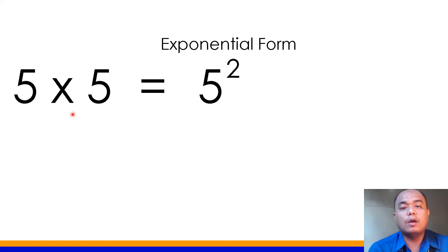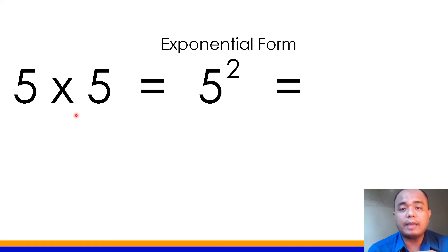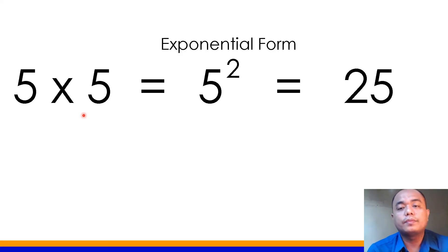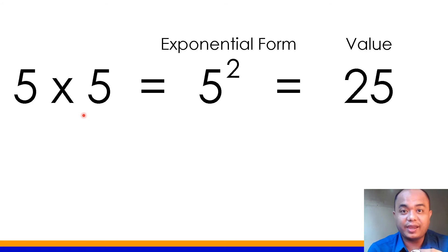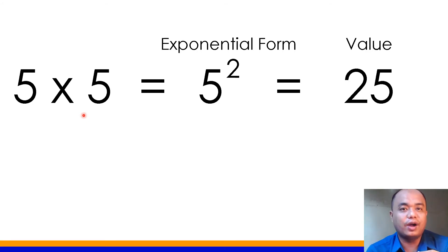When you see repeated multiplication of the same number, you can express it in exponential form to shorten it — they mean the same thing. So what is the value of 5 squared? Simply multiply 5 times 5, and the product gives you 25. So 25 is our value. I hope you now know how to get the value of exponential notation.